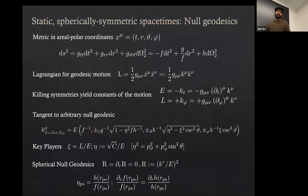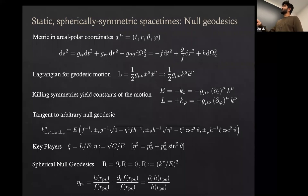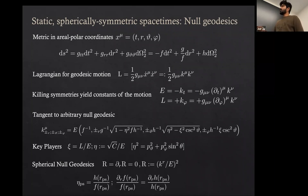Just briefly recapping: if you take a spherically symmetric spacetime in this form, the Lagrangian for geodesic motion is given like this. Because of Killing symmetries, you have two constants of the motion, plus a third called the Carter constant related to a hidden Killing-Yano symmetry. With four constants of the motion, including the Lagrangian, you can separate out the geodesic equation and write down the tangent to any arbitrary null geodesic. For null geodesics, the energy scales out, and we introduce energy-scaled parameters — the angular momentum ξ and constant η.